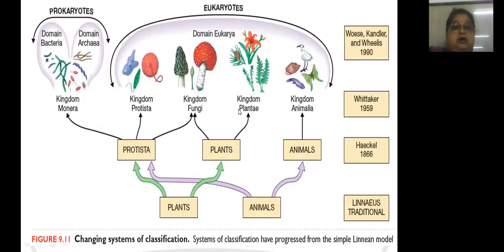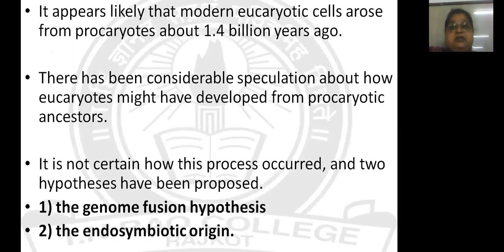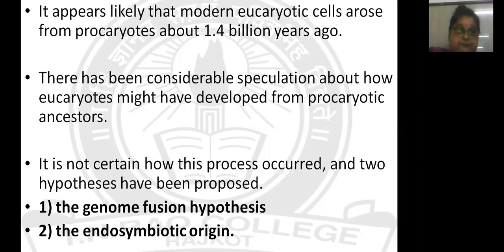Archaea are considered more ancient organisms than bacteria because of their adaptation to the harsh environments likely present on early Earth. Modern eukaryotic cells appear to have evolved from prokaryotes about 1.5 billion years ago. There has been considerable speculation about how eukaryotes might have developed from prokaryotic ancestry. Two solid theories put forward are the genome fusion hypothesis and the endosymbiotic origin theory. Some evidences support the first theory and some support the second, but rather the actual hypothesis uses clues from both.